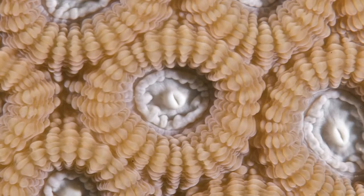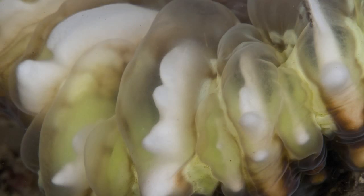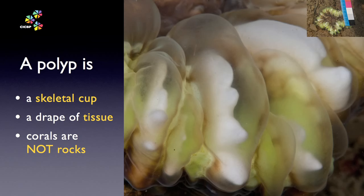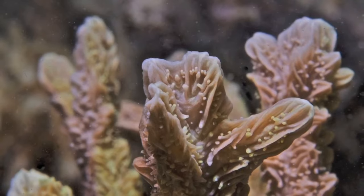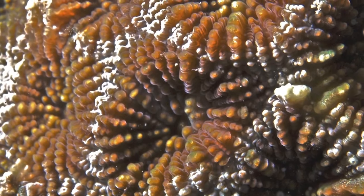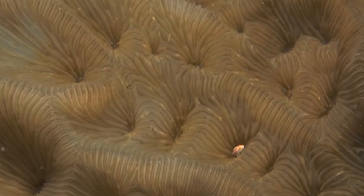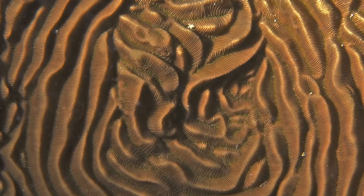We already know that hard corals have an internal limestone skeleton. The skeleton is secreted by the tissue that overlies it. This tissue is separate from the skeleton, and in some corals like this Cyphastrea, the skeleton can be seen through the tissue when the coral inflates it with water. So the coral skeleton is built by the polyp, which is in effect a drape of living tissue sitting upon a limestone cup of its own design. The message here is that while there are many types of coral and they may look very different, the fundamental principle remains the same — the living animal is called the polyp, and it lives in its own skeletal cup called a corallite.